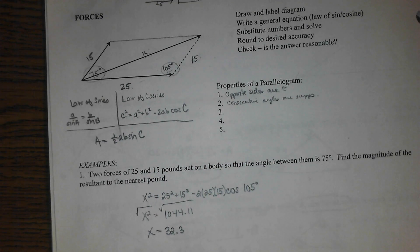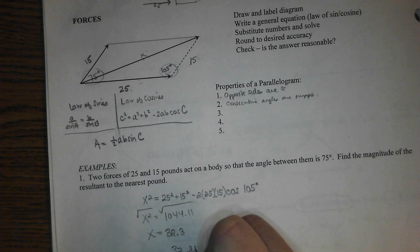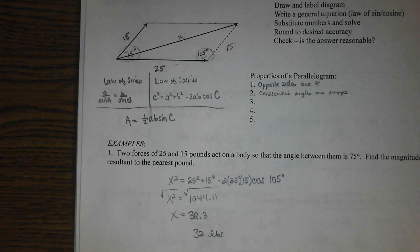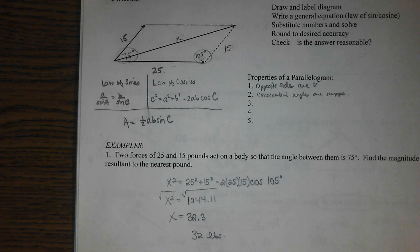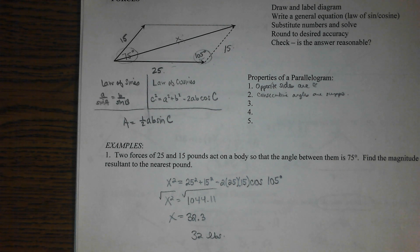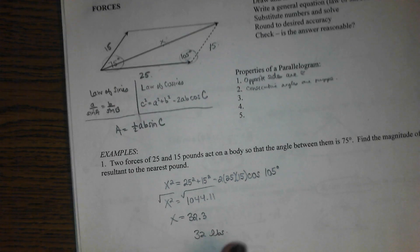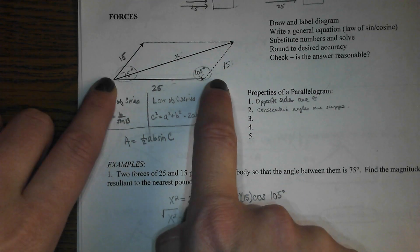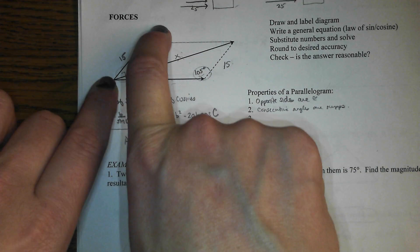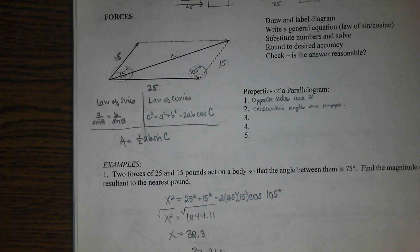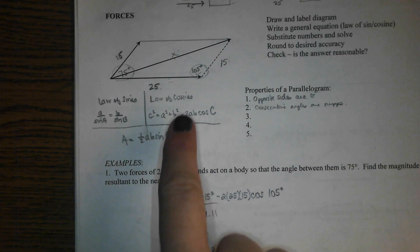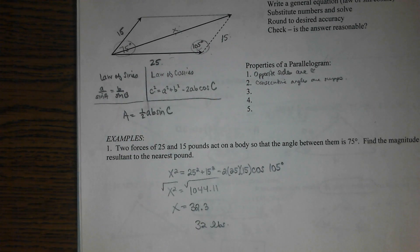32.3, to the nearest pound, 32 pounds. So they're not working perfectly together because the maximum those forces could combine to is 40 if they were working perfectly together. But they aren't working opposite from each other. Like if this one's working perfectly east and this one's a little bit northeast, at least there's a little bit of east coinciding there. And so it's a little bit more than just the one person working by himself. Does that make sense? Okay.